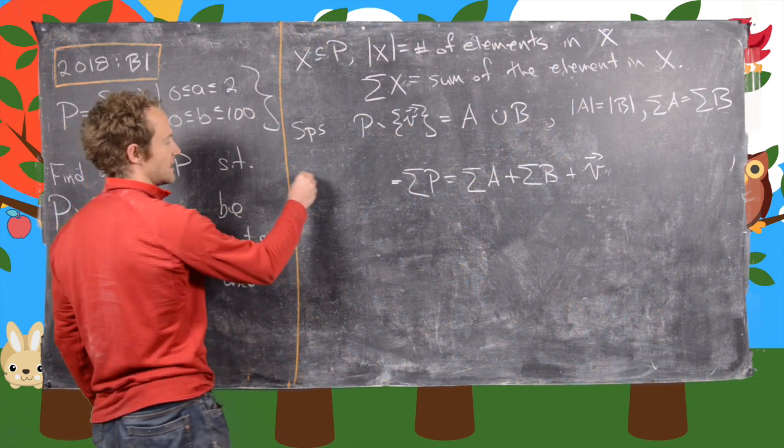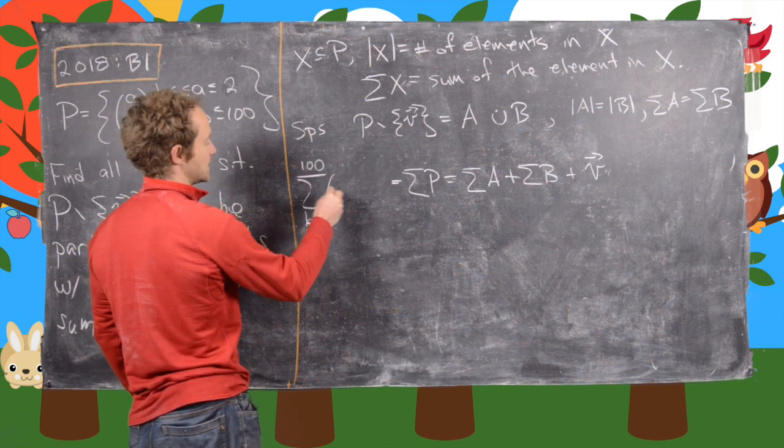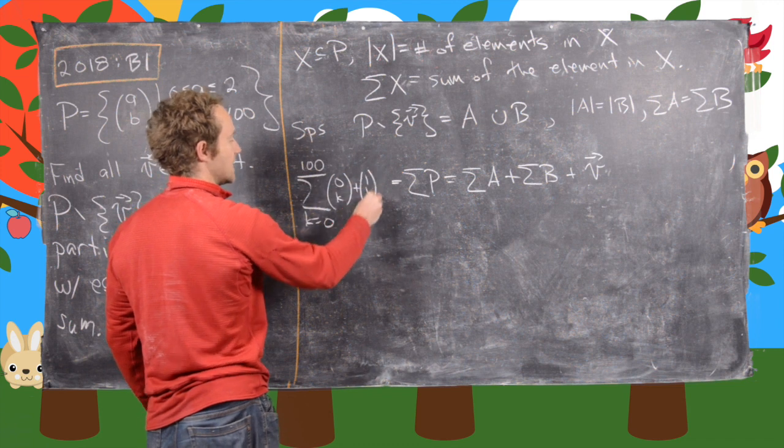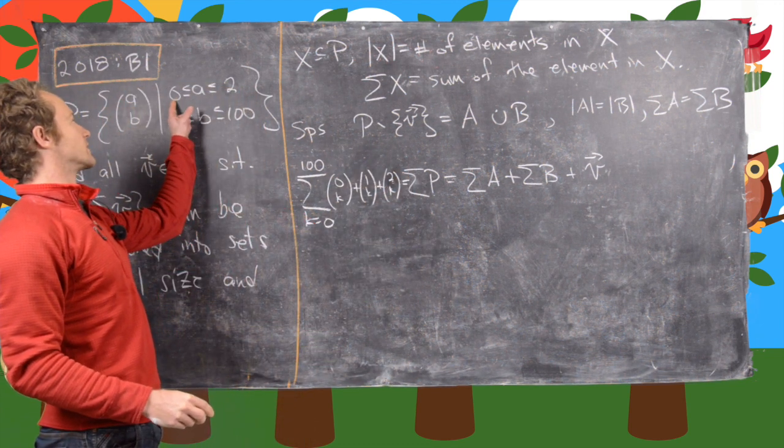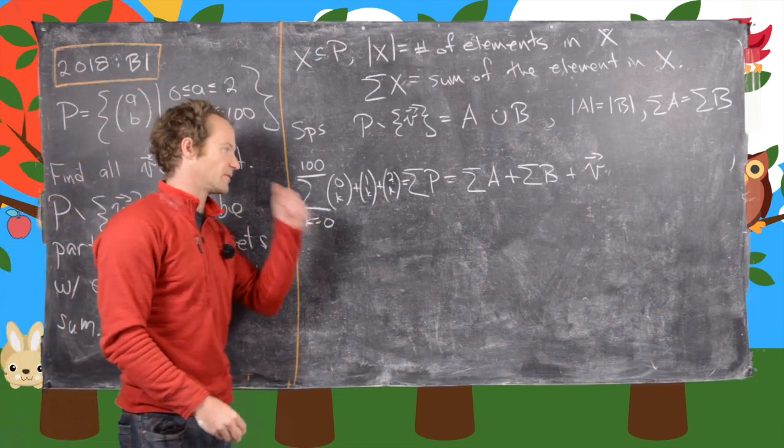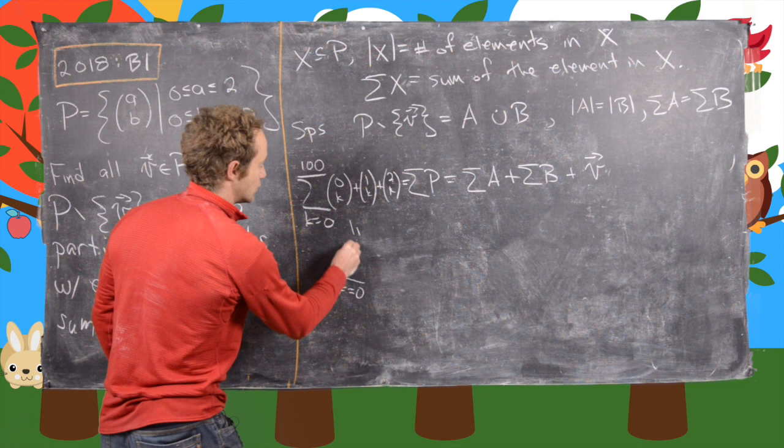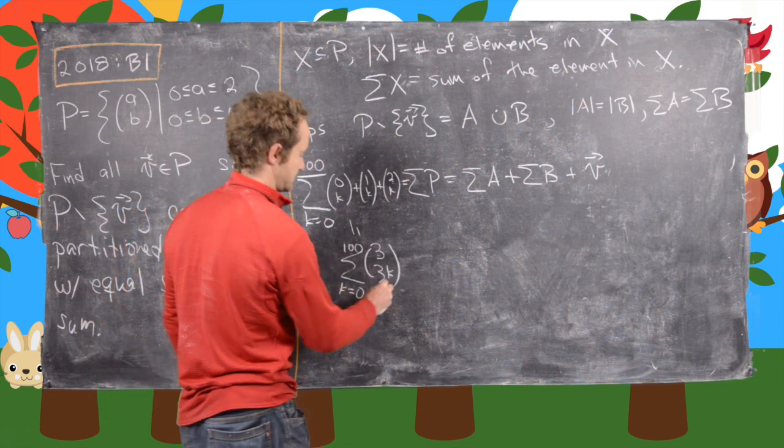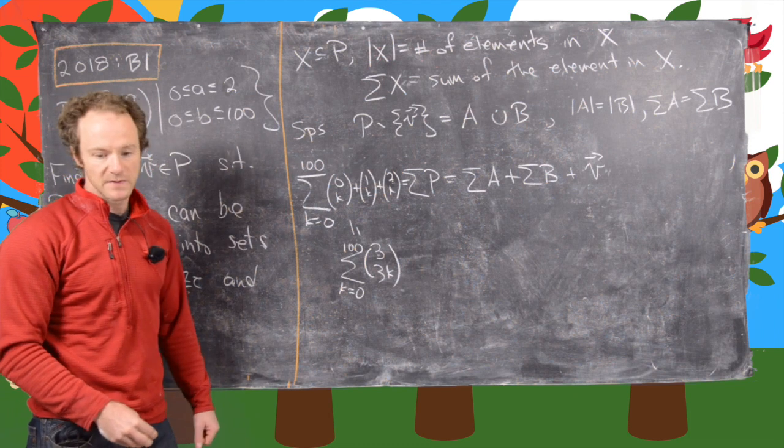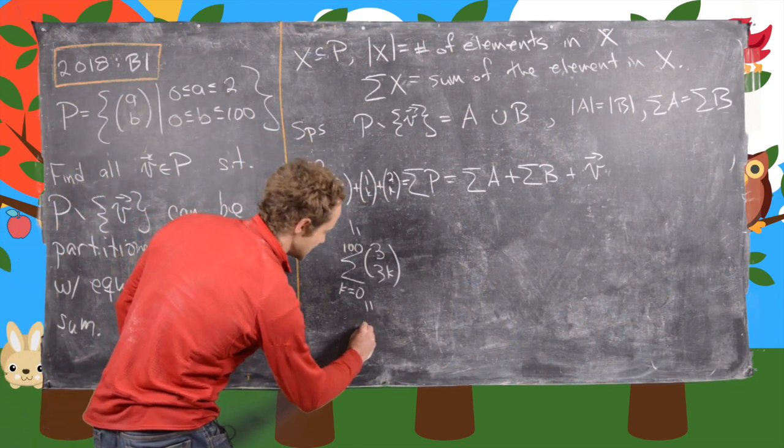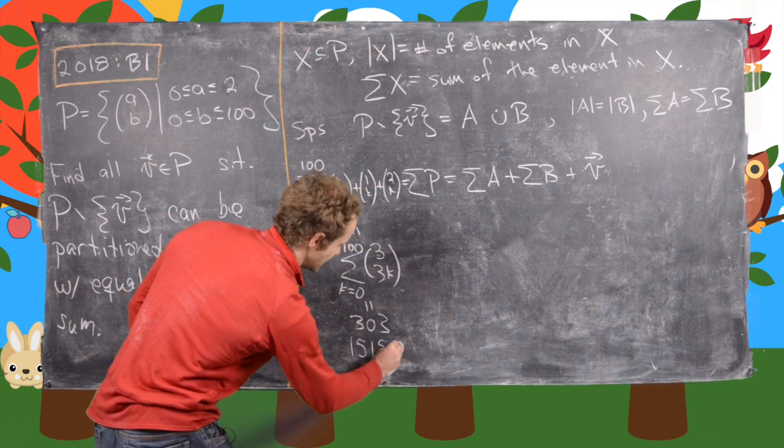The next thing we can do is add up all the elements in P. That's the sum K equals 0 to 100 of (0,K) plus (1,K) plus (2,K). So we're running A over 0, 1, and 2, and B runs from 0 to 100. Notice that's exactly equal to the sum K equals 0 to 100 of (3, 3K). The bottom part is 3 times a triangular number, so this equals (303, 15150).